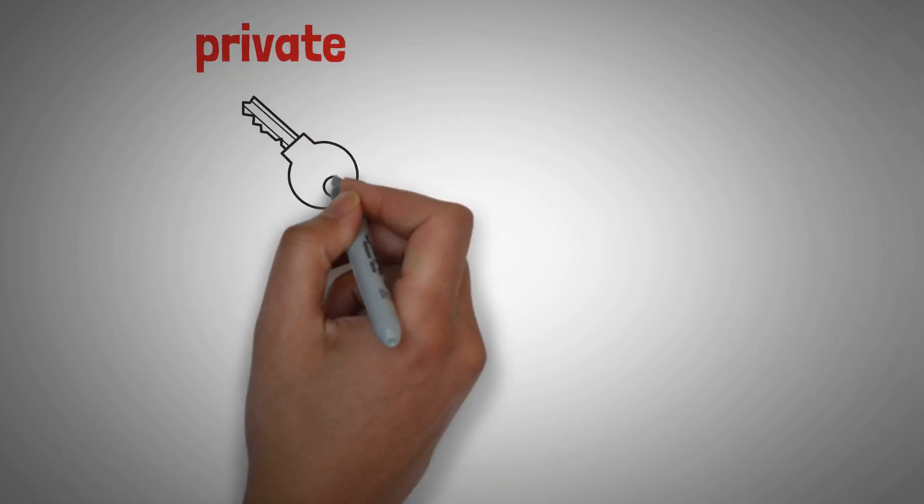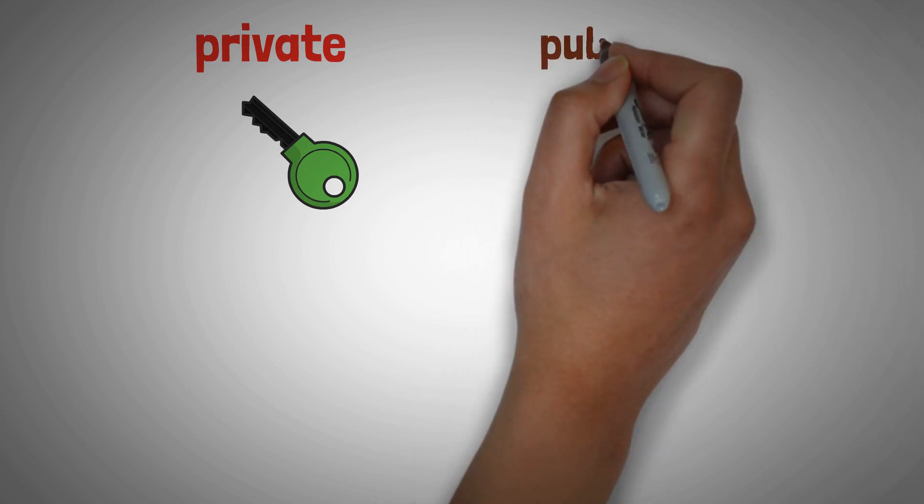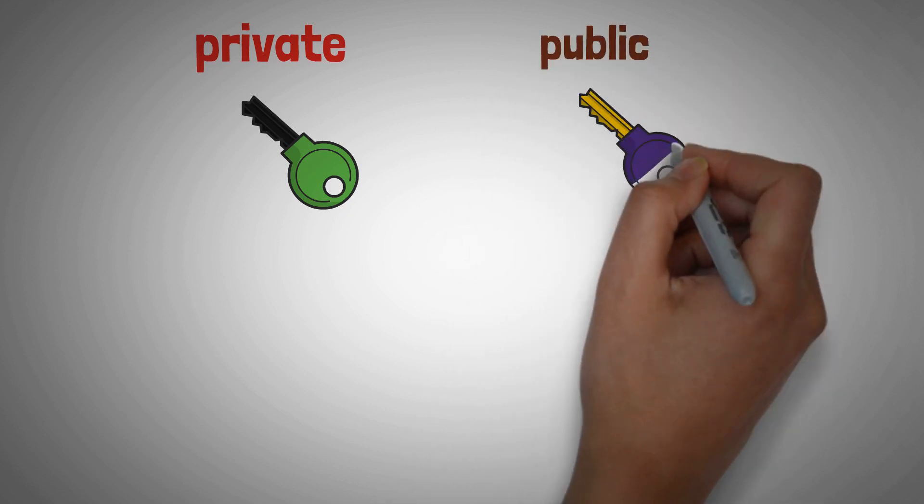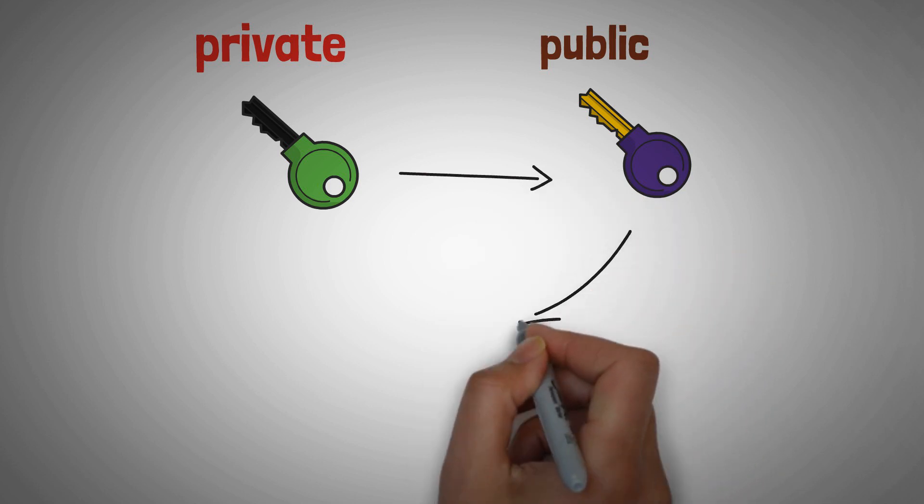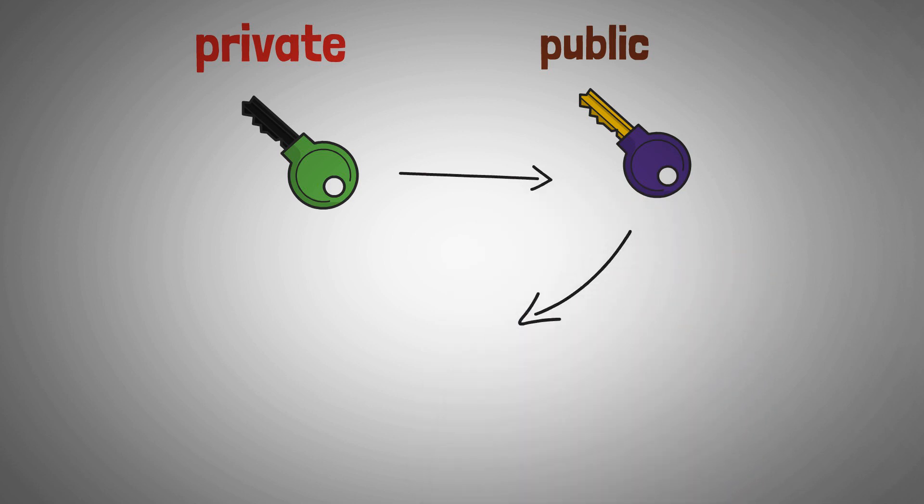What's the link between private key and public key? The private key of a wallet generates a public key. Then the public key is compressed, hashed, and turned into a public address which we share in order to send and receive funds.